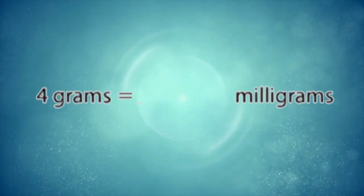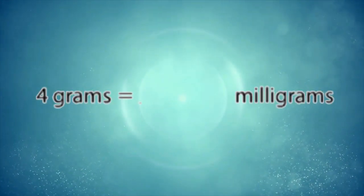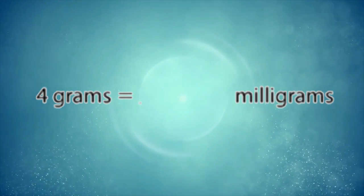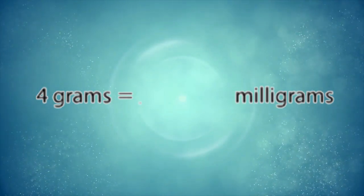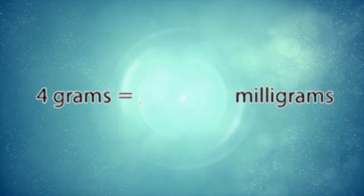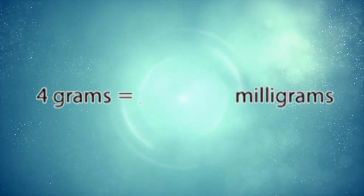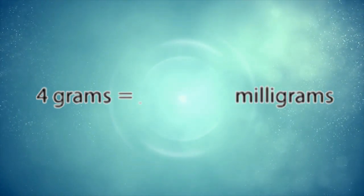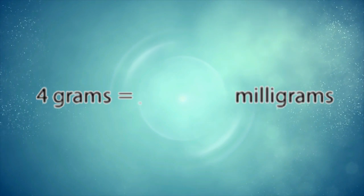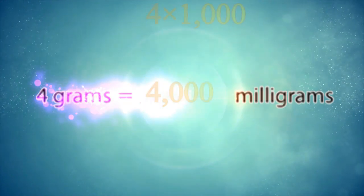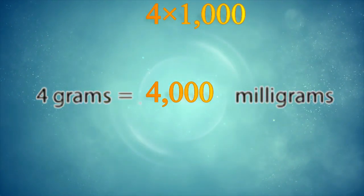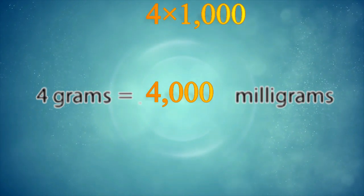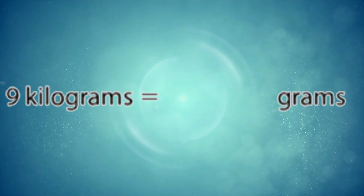In this example, 4 grams equals how many milligrams. Excellent! 1 gram equals 1000 milligrams, so we have to multiply 4 by 1000. Four times 1000 equals 4000 milligrams.